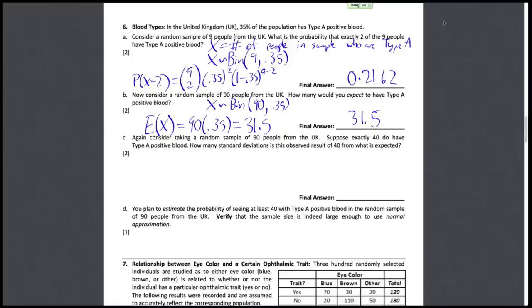Note that you do not round expected values, even though it's impossible to get 31 and a half people that have type A blood, we still report expected values as fractions or decimals.